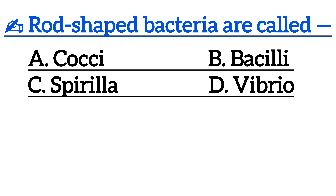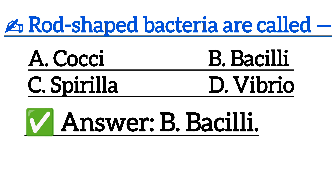Next one is: Rod shape bacteria are called — Option A: Cocci, Option B: Bacilli, Option C: Spirula, Option D: Vibrio. Correct answer is Option B: Bacilli.